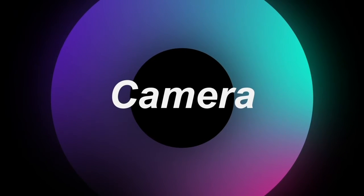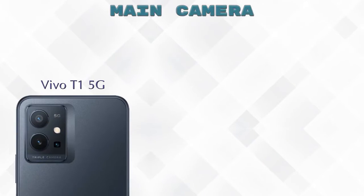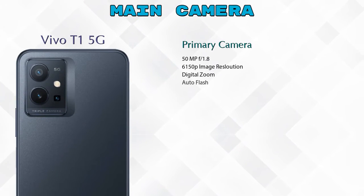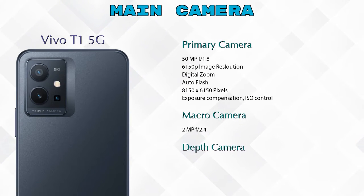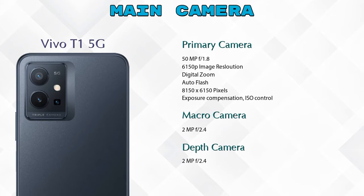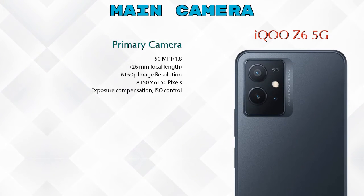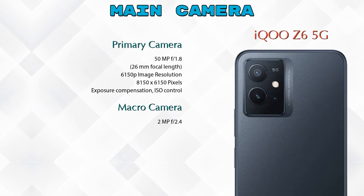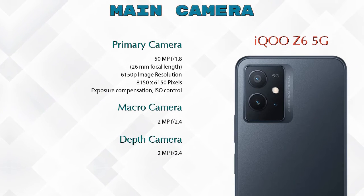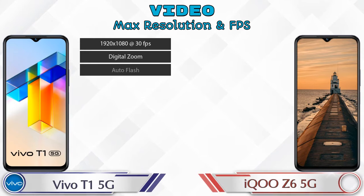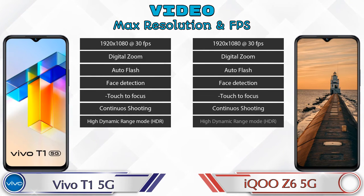Let's see the detail about our favorite feature: camera. First, talking about the rear camera, we can see three cameras in the T1 5G — primary camera, macro camera, and depth camera. The iQOO Z6 5G also has three cameras: primary camera, macro camera, and depth camera. If we talk about video camera features, both phones have seven different types of features available.